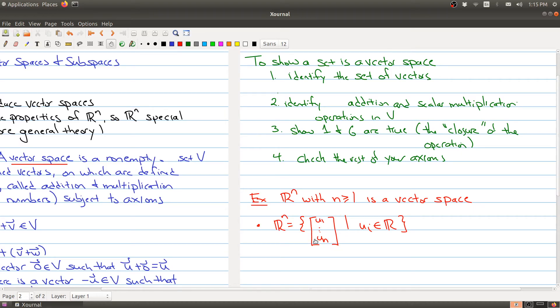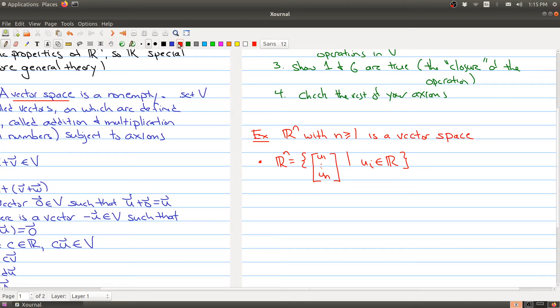So what is the set of vectors? Well, it's all the elements. And we actually have been calling them vectors, all these column vectors, u1 through un. So that's my set of vectors. Next, you want to be careful, make sure you understand what are the operations. And in this case, addition is just regular vector addition. So I'll just repeat it right here.